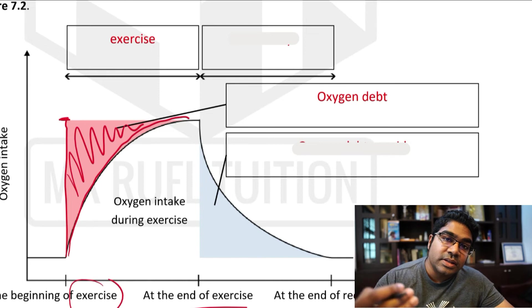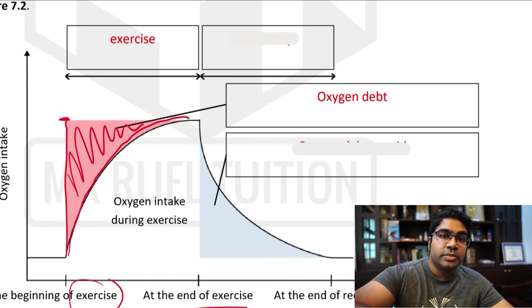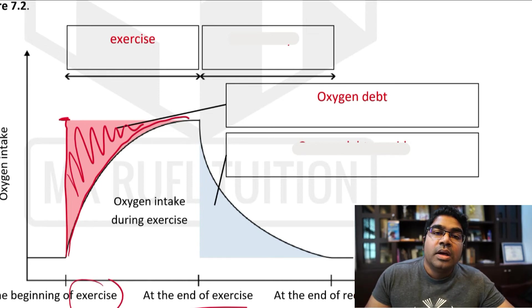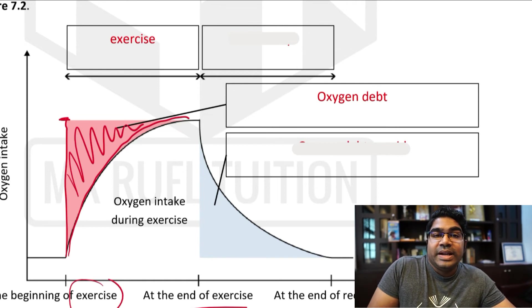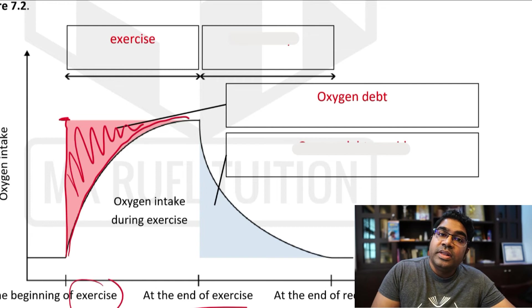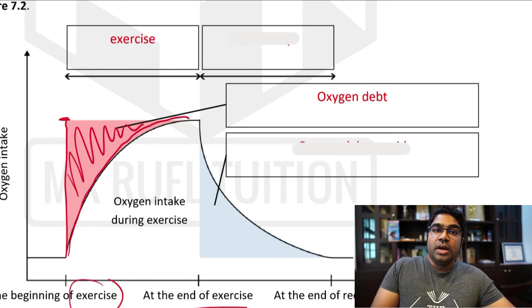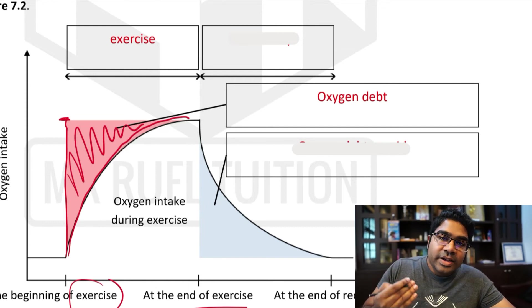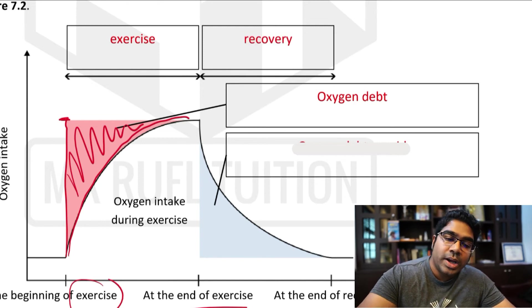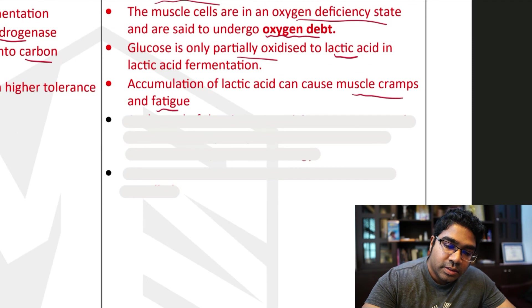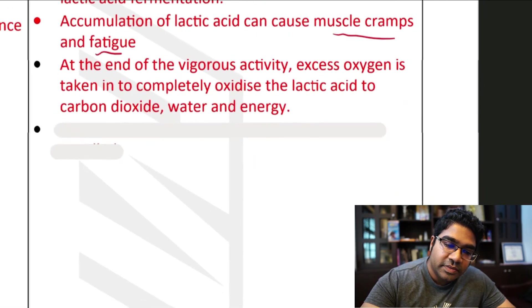And then after exercising, let's say completing a 100-meter sprint, you will realize that at the end of it, we will start panting, gasping for air. Our breathing rate increases and our breathing depth increases as well. We will be taking deep breaths at a very high rate. This is called the recovery period. And why does this happen? At the end of the vigorous activity, excess oxygen is taken in.